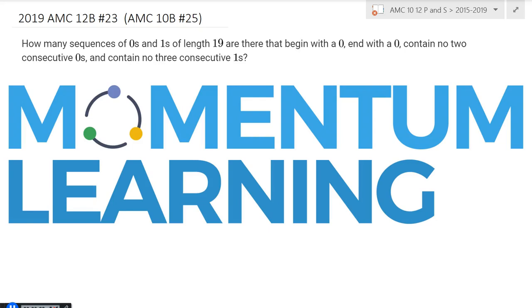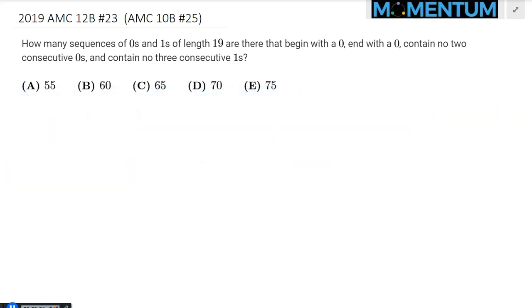Consider the following 2019 AMC 12B problem number 23. The same problem also appeared as AMC 10B problem number 25 in the same year. Here is a view of this problem. We would like to count the number of binary sequences of length 19.